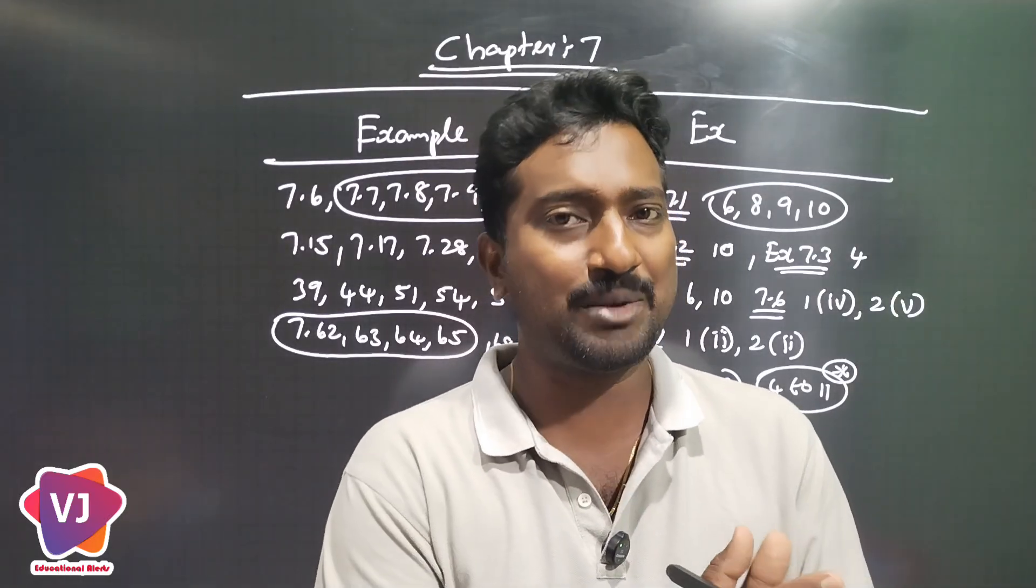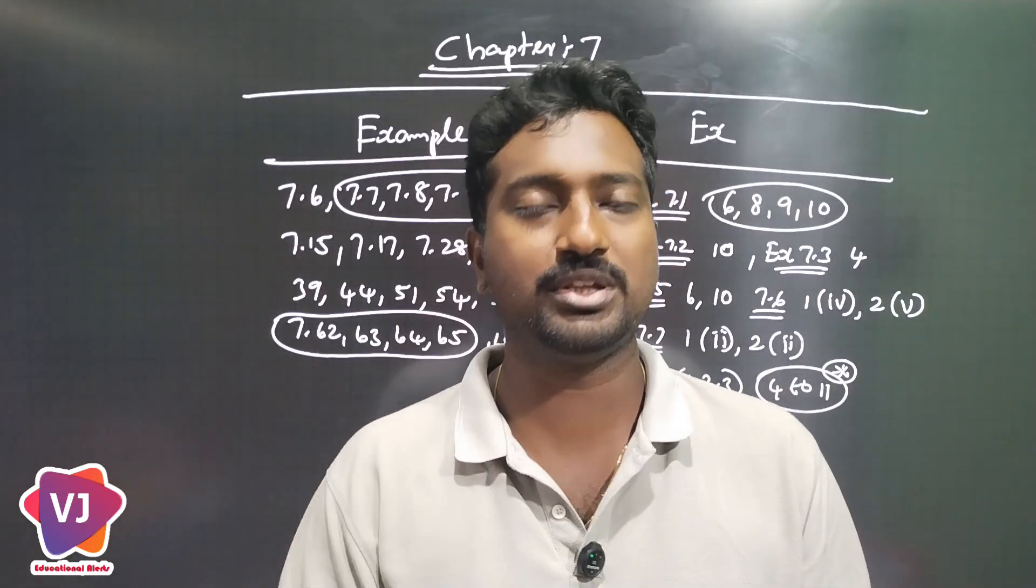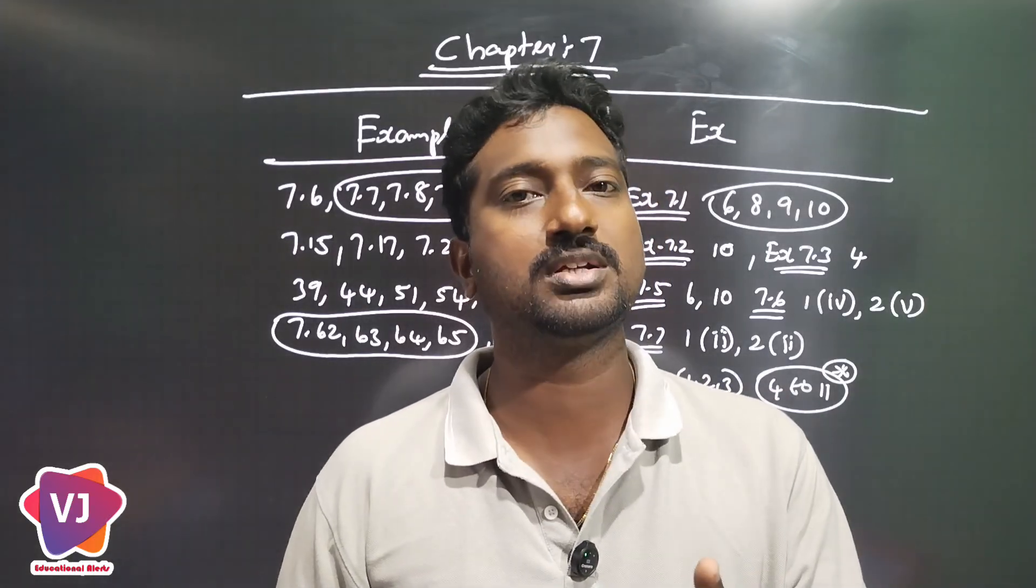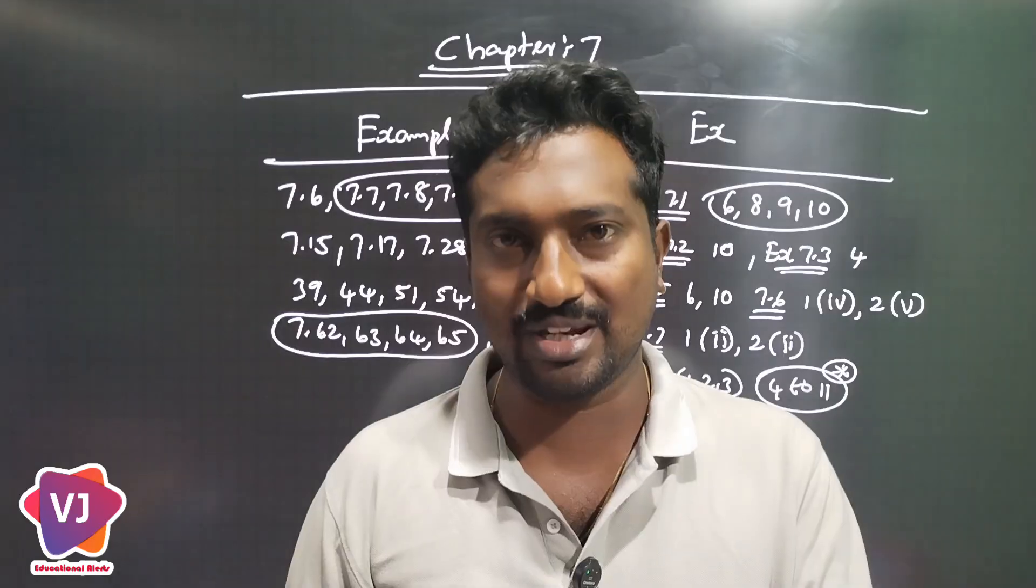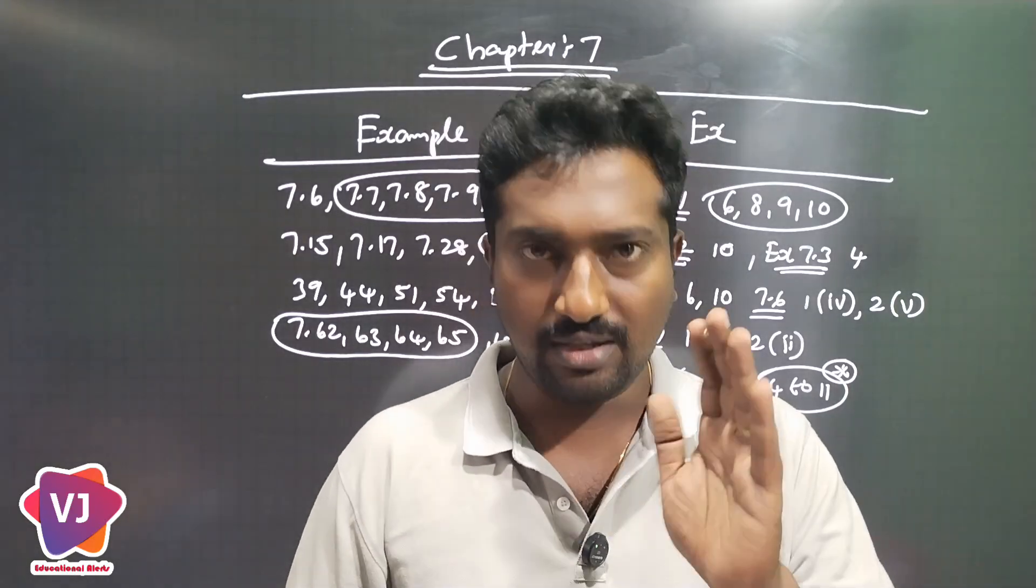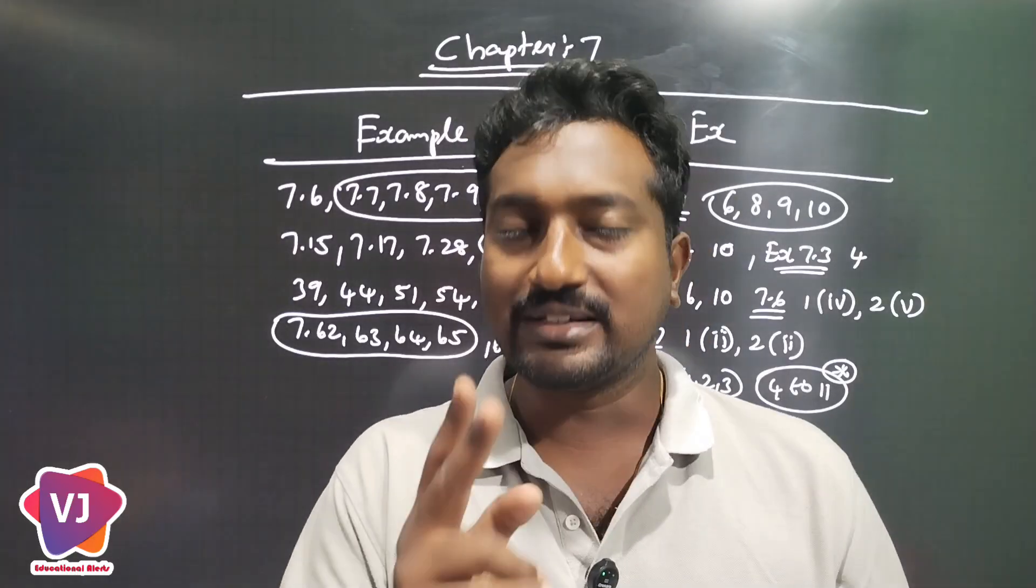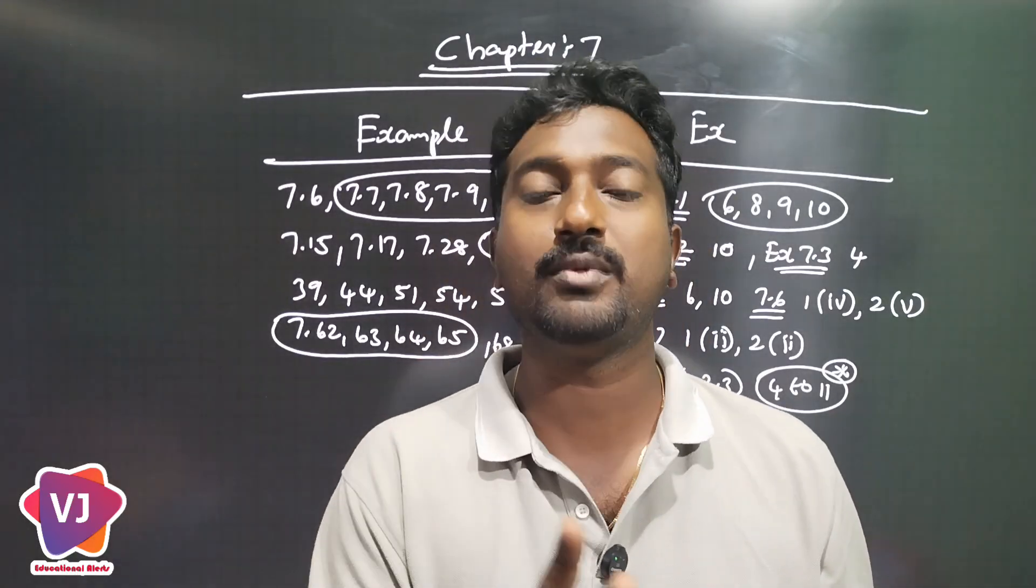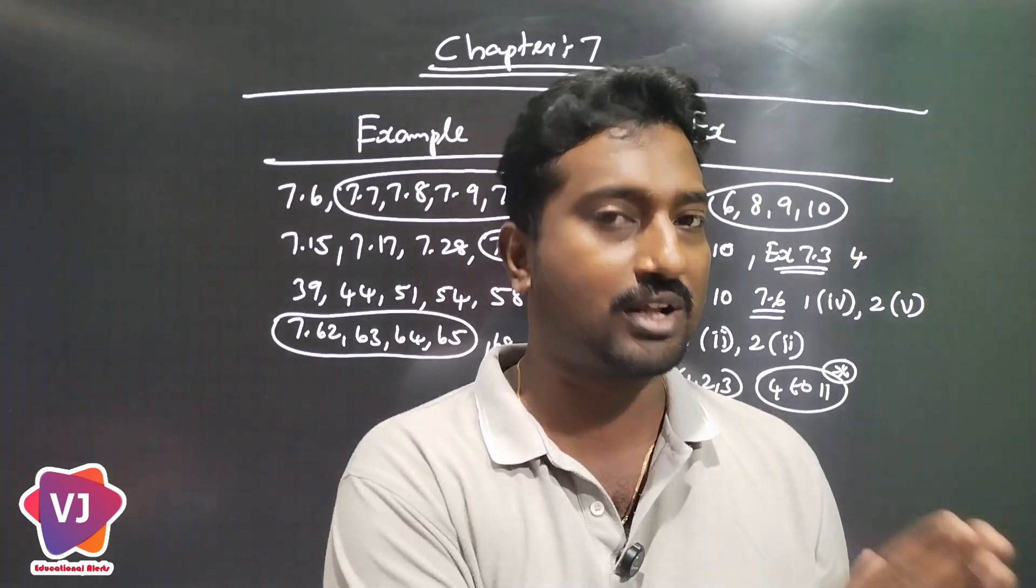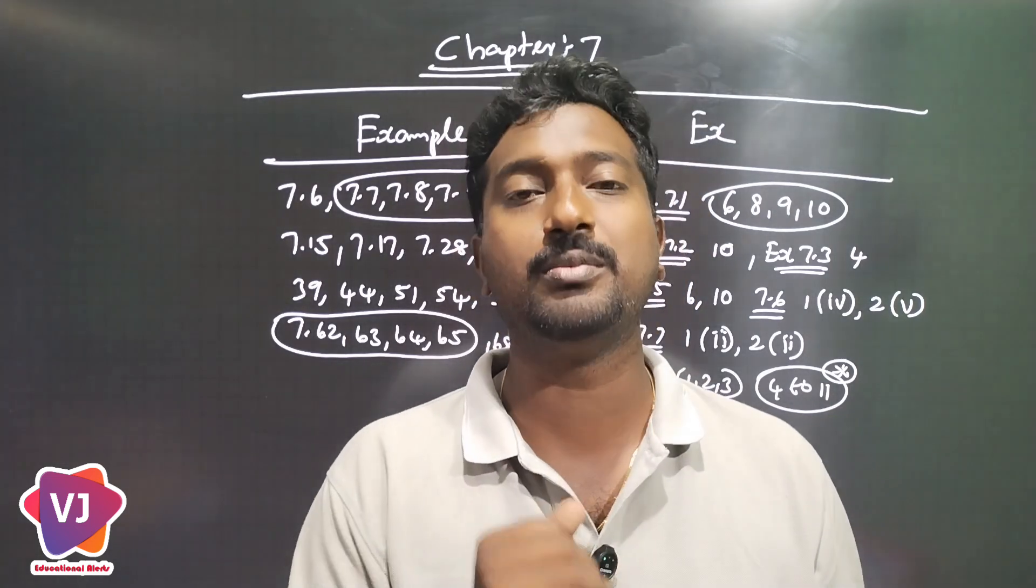First, we will take Chapter 7. Chapter 7, Public Exam. We will take 2 marks, 1 mark, 2 marks, 1 mark. If we are here, we will take 7 marks. When we select 3 marks and 3 marks, we will take 2 marks. In the maximum, 3 marks and 5 marks.